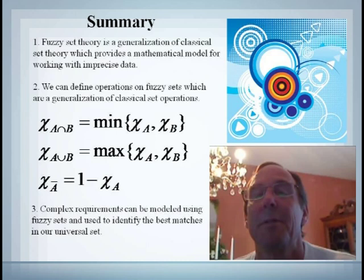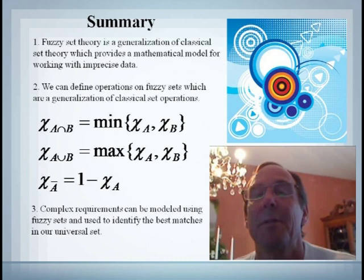So in summary, fuzzy sets represent a generalization of classical set theory and provide us with tools for working with imprecise data. We can define operations on fuzzy sets, which are generalizations of our normal classical set operations. And using these new definitions, all of our old properties for sets still hold true.